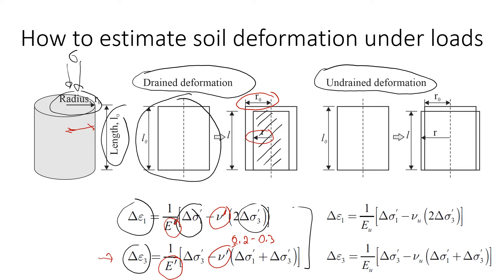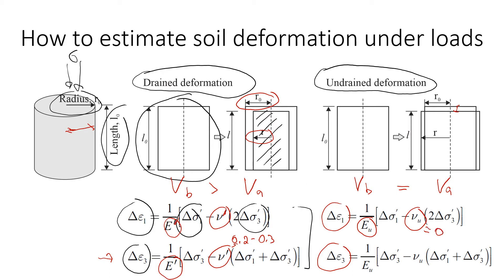For undrained deformation, water cannot drain out of the sample so it stays in. After we apply load there will be some changes in height or radius, but there won't be any change in volume — the volume before and after remains the same. For undrained conditions we use similar formulas, but with undrained Young's modulus and undrained Poisson's ratio, which we always assume equal to 0.5. If it's not given to us, we just use 0.5.